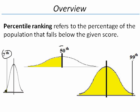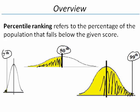In the middle is someone who is at the 50th percentile. This person scored above 50% of the population. On the right is someone who is at the 99th percentile. Very impressive. This person scored above 99% of the population.